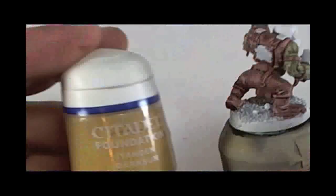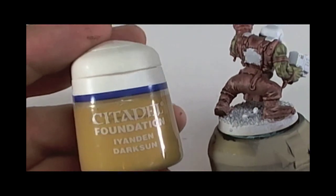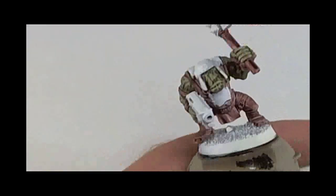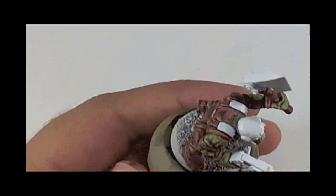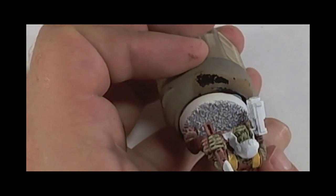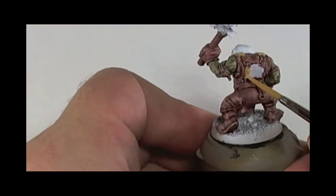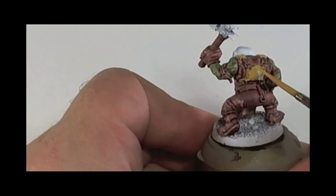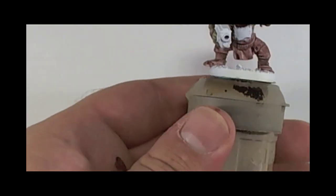Once this is done, we'll be using Yenden Dark Sun on the front plate, back plate, shoulder plates and helmet. This time the paint is only thinned a little bit.